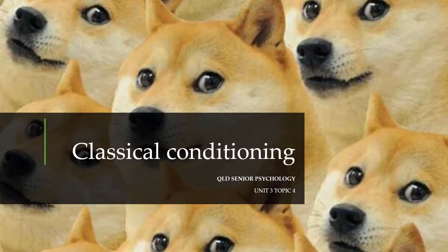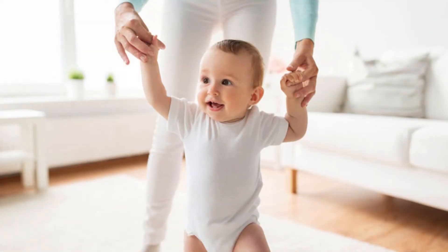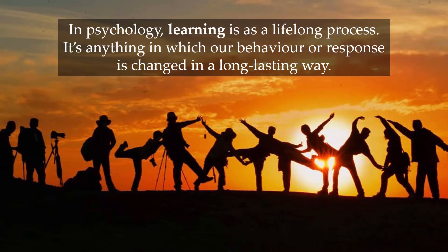Today we're going to be looking at possibly one of the most famous topics in psychology: classical conditioning. But first, a quick word on what it means to learn. As a child, learning means gaining skills and information like learning how to walk or read. As an adult, it might mean enrolling in a course. But in psychology, learning is a lifelong process — anything in which our behavior or response is changed in a long-lasting way. In the next few lessons we'll look at three forms of learning: classical conditioning, operant conditioning, and observational or social learning.